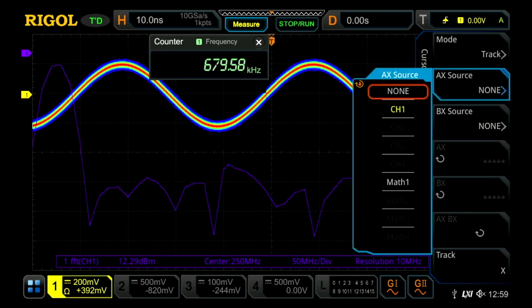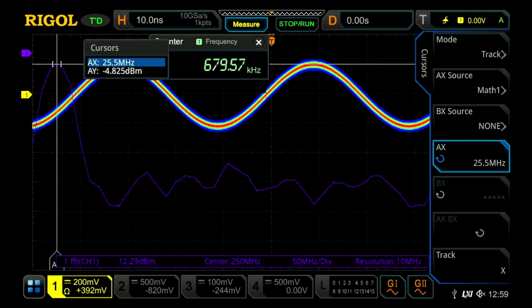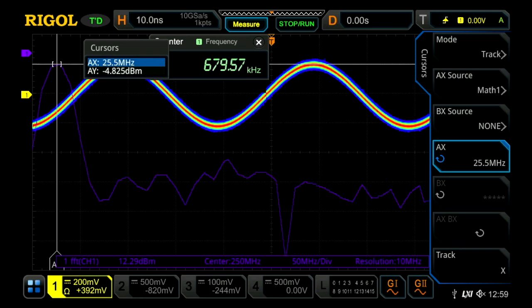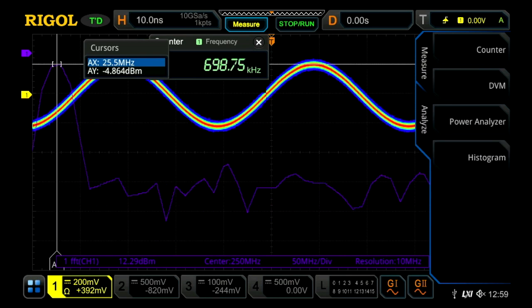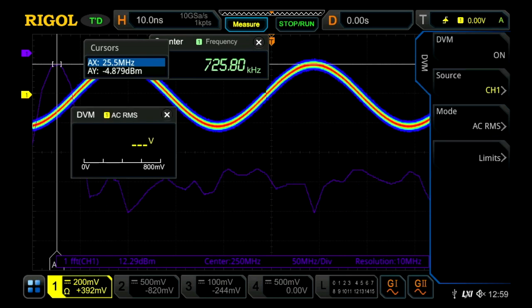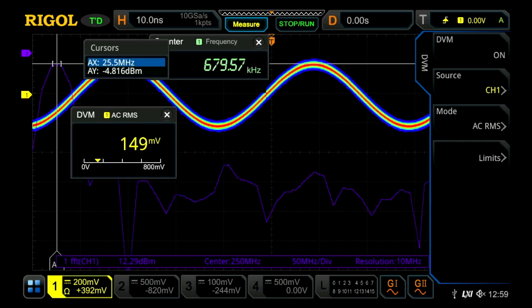Let's turn on a cursor on that FFT as well. We can see the peak cursor at the 25 megahertz of that sine wave. Now let's see what else we can turn on. Let's turn on some measurements like our digital voltmeter.